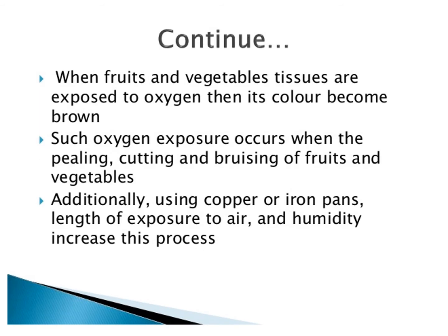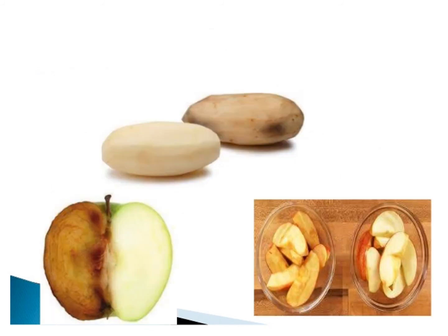When fruits and vegetable tissues are exposed to oxygen, their color becomes brown. Such oxygen exposure occurs when peeling, cutting, or brushing of fruits and vegetables is carried out. Additionally, using copper or iron pans, length of exposure to air, and humidity all increase the browning process.